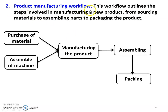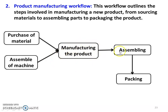The second is the product manufacturing workflow. This workflow outlines the steps involved in manufacturing a new product, from sourcing the material to assembling the parts to packaging the product. You purchase materials, arrange machines in a particular sequence according to the required manufacturing steps, carry out manufacturing, then assemble the product, followed by packaging and dispatching. This is the workflow path for a product manufacturing system.